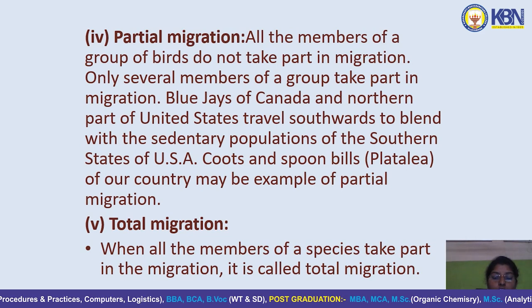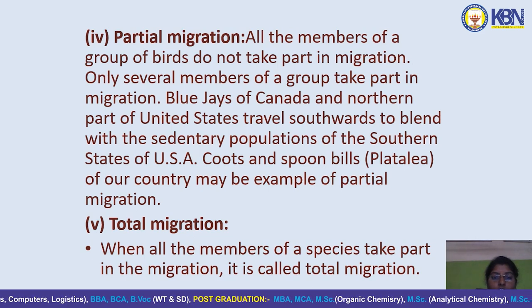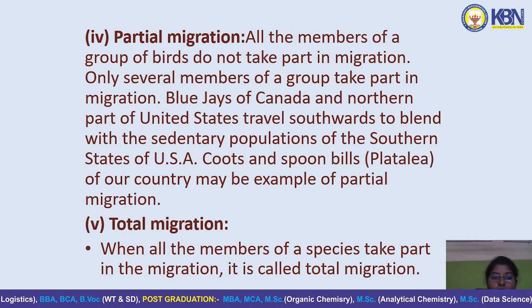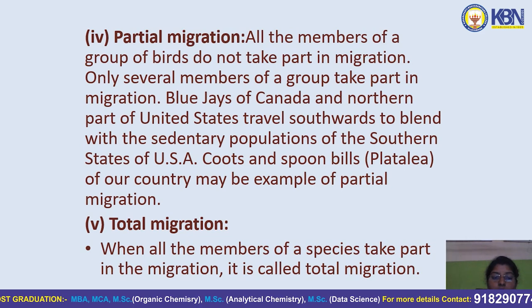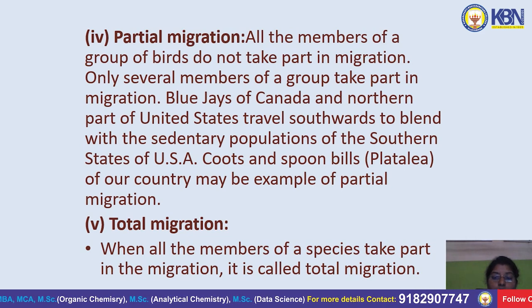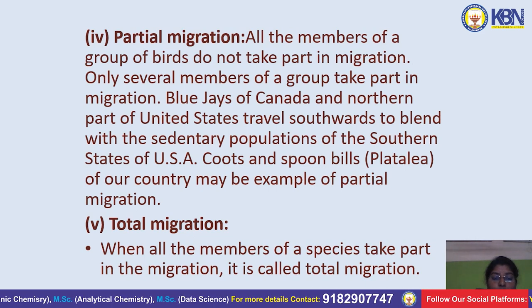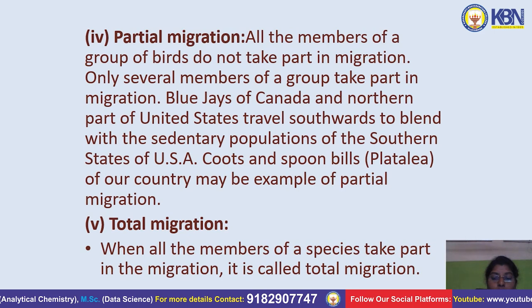Blue jays of Canada and the northern part of the United States travel southwards to blend with the sedentary population of the southern states of USA. Coots and spoonbills of India may be examples of partial migration.